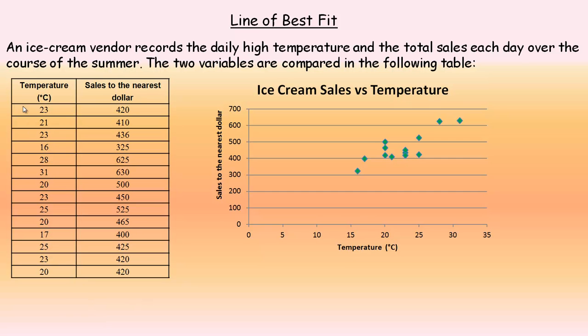We have in this table a number of days, the highest temperature, and the volume of ice cream they're selling in dollars. I've plotted it in a scatter plot where sales is the dependent variable—it depends on the temperature. You can see there's a fairly positive correlation, trending upward. Generally, the hotter the day, the higher the amount they're selling.